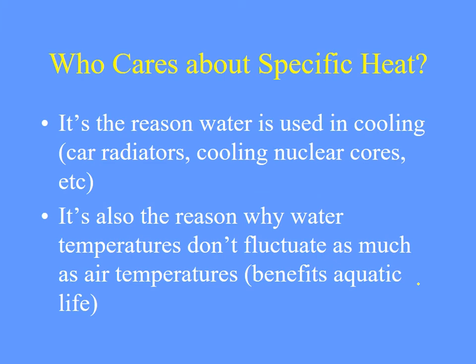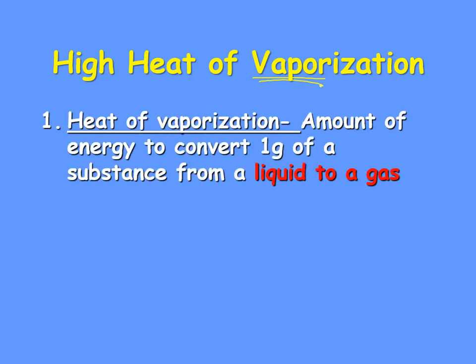Another reason water temperatures don't fluctuate too much is because of specific heat — air temperatures might fluctuate 20 degrees in a day, but water won't do that. If we're talking about the ocean or a swimming pool, that temperature won't really budge. The second part of heat capacity is the high heat of vaporization — this means to turn water into water vapor. The definition of heat of vaporization: the amount of energy to convert one gram of a substance from a liquid to a gas. We're not changing the temperature — we're changing the phase of matter.